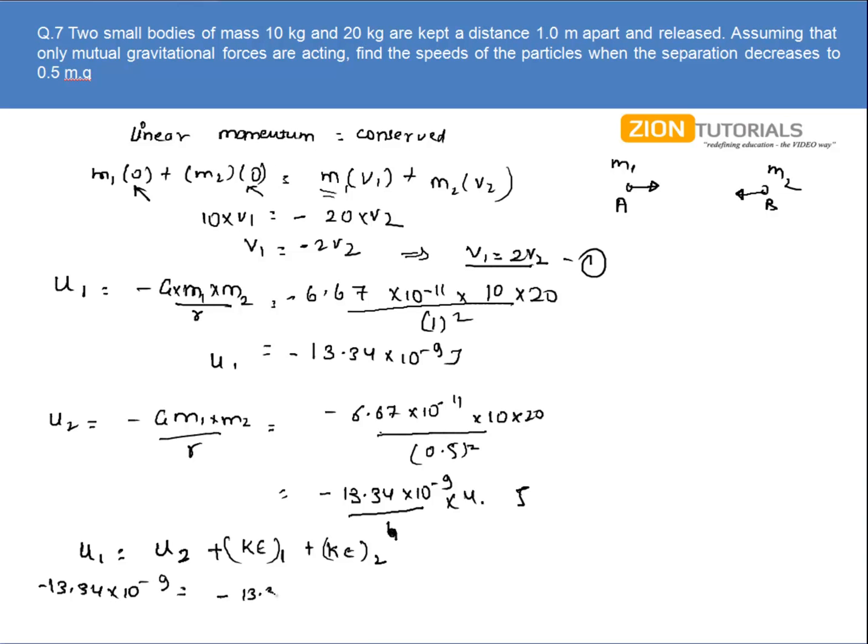Just substitute the value. I do have minus 13.34 into 10 to the power minus 9 equals minus 13.34 into 10 to the power minus 9 into 4 plus half of 10 into V square plus half of 20 into 2V square. So I will put the velocity of 10 kg as V and the velocity of 20 kg as 2V.